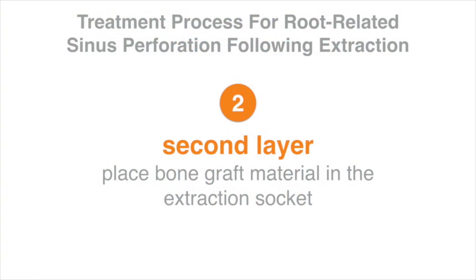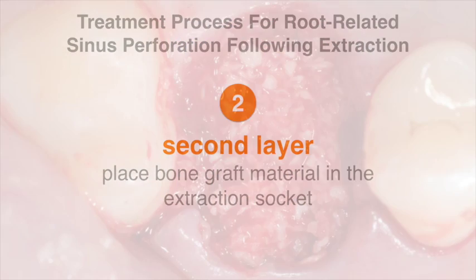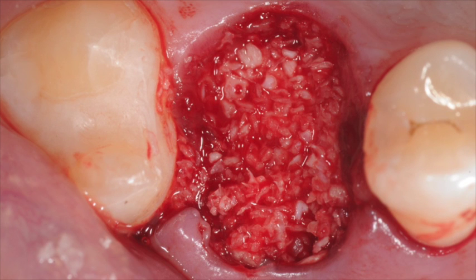The second layer is placement of bone graft particulate material, which is packed gently into the extraction sites with lateral placement and as little or minimal pressure down the axis of the root, in order to avoid displacement of the bone graft material into the sinus.